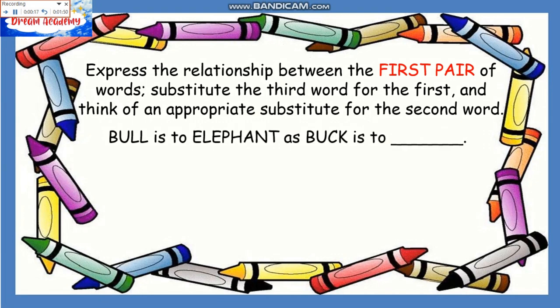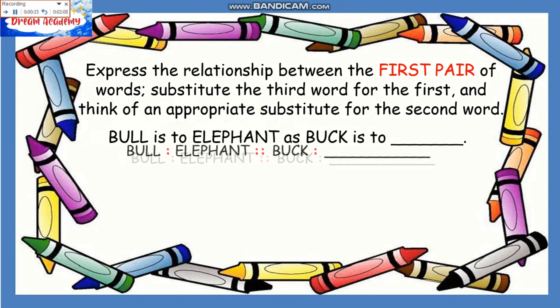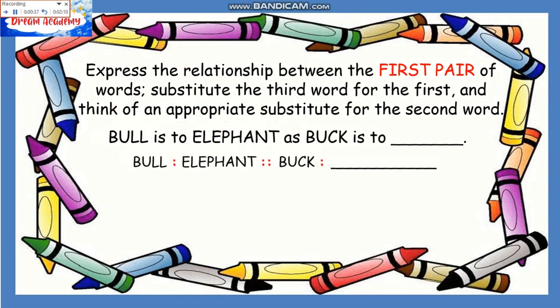Let's take this example: Bull is to elephant as buck is to blank. You will see this in sentence form. Instead of seeing the words 'is to' and 'as,' you will see the following format. So, bull is to elephant as buck is to blank.